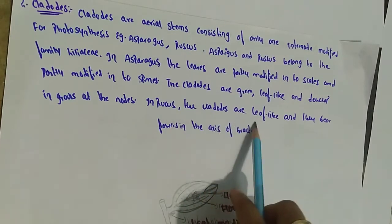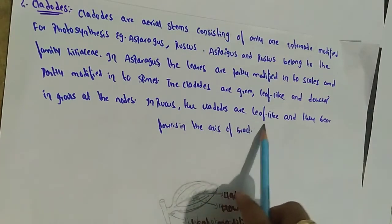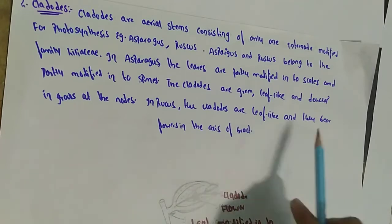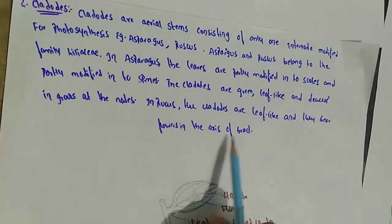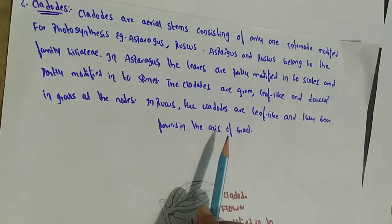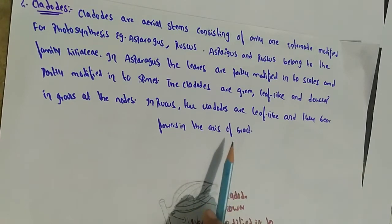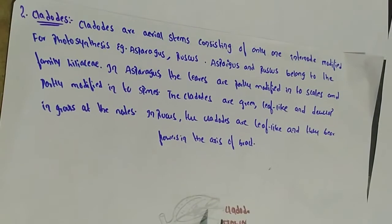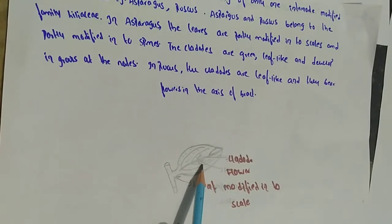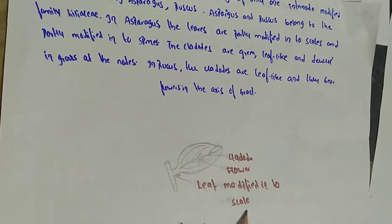In Ruscus, the cladodes are leaf-like and bear flowers in the axil of a bract. A bract is a modified leaf or scale, typically small, found at the base of a flower. Along the cladode there is a flower, and the leaf is modified into a scale.